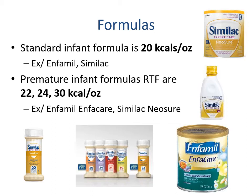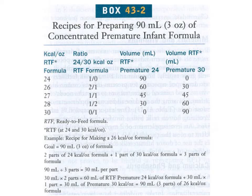Standard infant formula is 20 calories per ounce. Premature infant formulas come ready-to-feed as 22, 24, and 30 calories per ounce — similar to buying regular, plus, or premium gas. It depends on the patient's needs: do you need regular calories, some extra, or a whole lot extra?